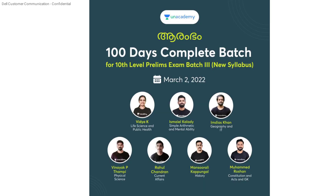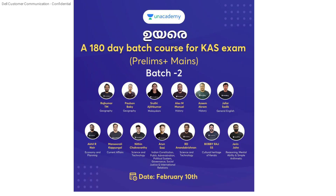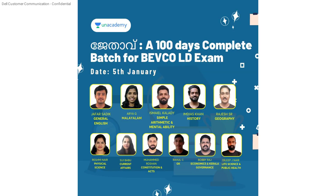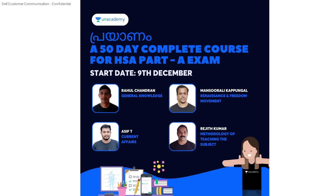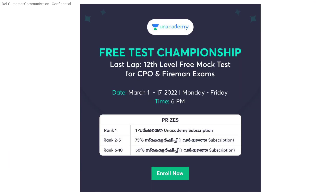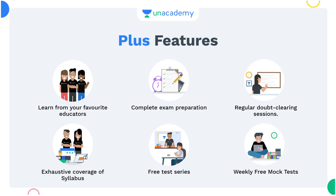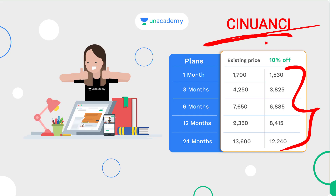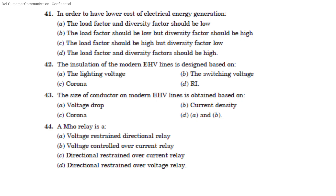March 9 — there is a 100-day batch course for a complete batch. March 2 — a batch course for KS batch 2. February 10, and January 19 batches are already running. CPO and CEO batches are running. Test series: free mock test championship for 12th level, free mock test for CPO exams, Monday to Friday 6 PM. Use my referral code for a 10% offer. These are our batch course details.